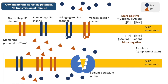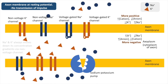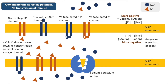During resting potential, the inside of the neuron is more negative than the outside of the neuron. This is due to the presence of the large anions inside the axon. Also, the axon membrane is more permeable to potassium ions than sodium ions. Potassium ions and sodium ions play an essential role in the formation of the resting potential.